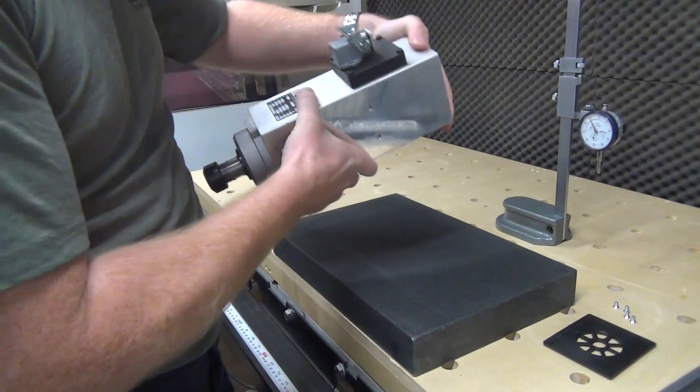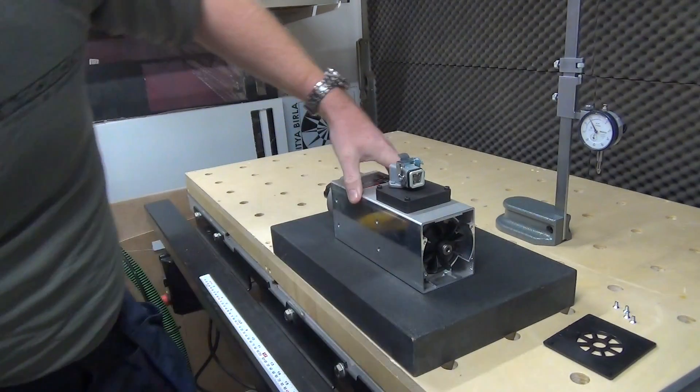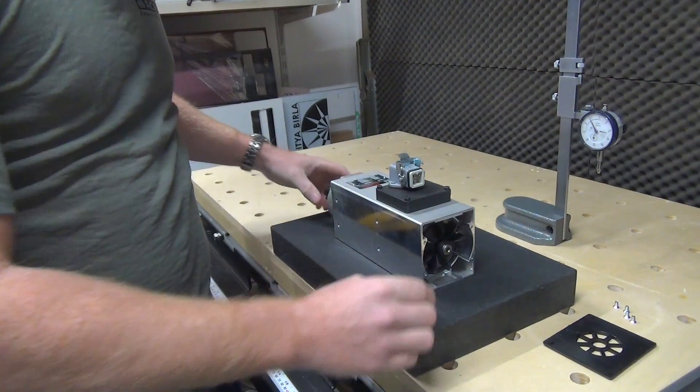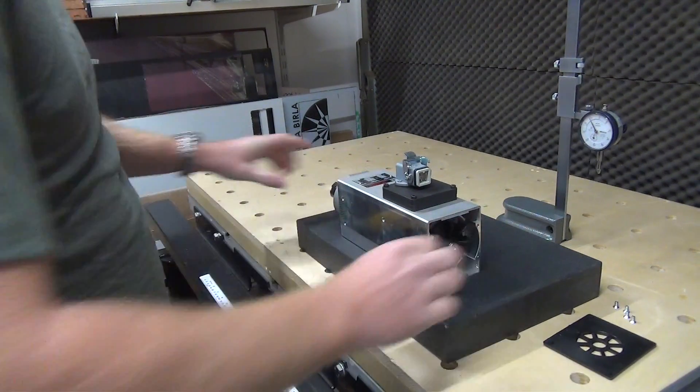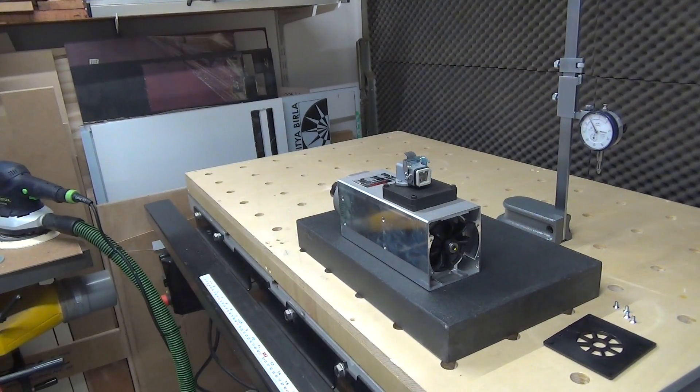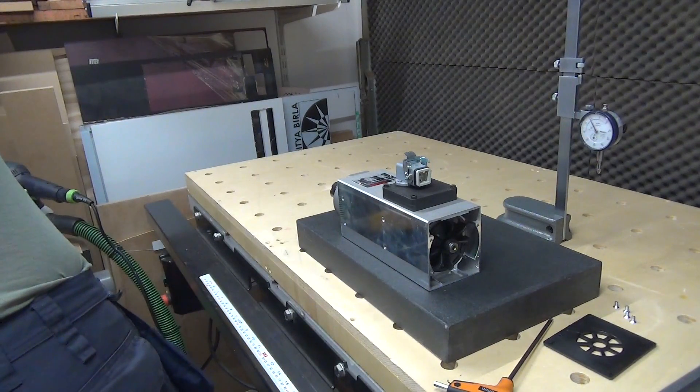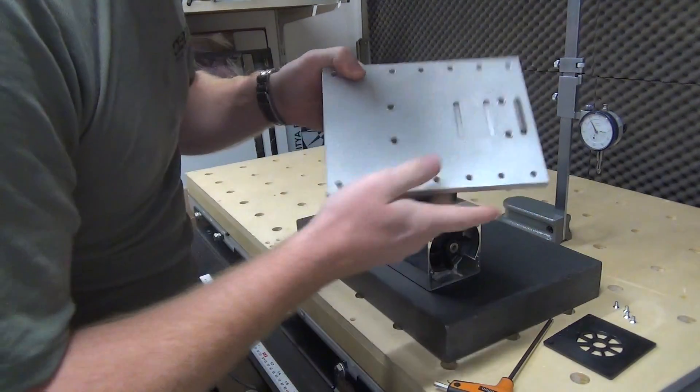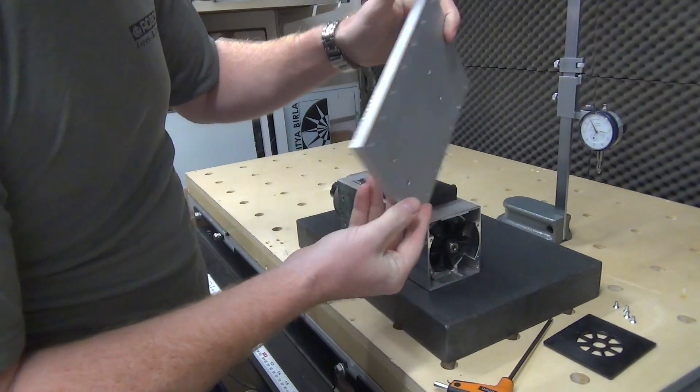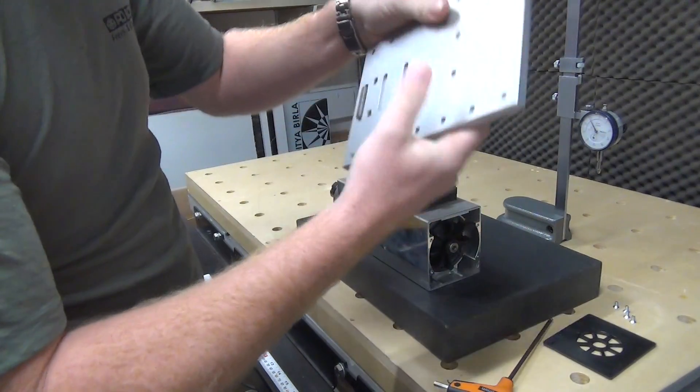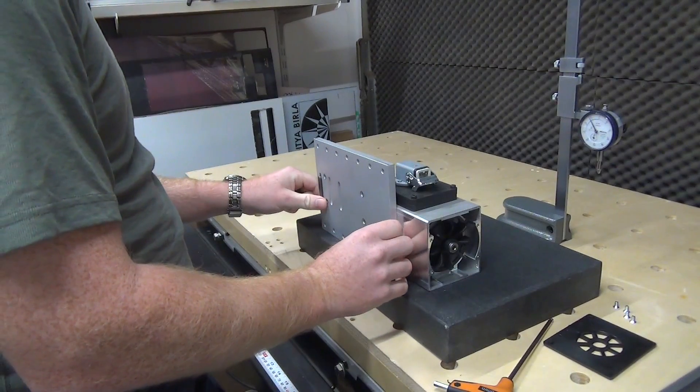To make sure this spindle is mounted square to the CNC machine, we have to do some measurements. I'm going to do so on this granite surface plate and use the height gauge you see in the back, with the test indicator. The mounting plate we're going to use is this one. The drawings can be found if you follow the full info link, and the spindle is going to be placed on this mounting plate.